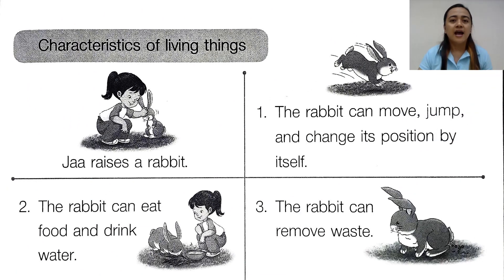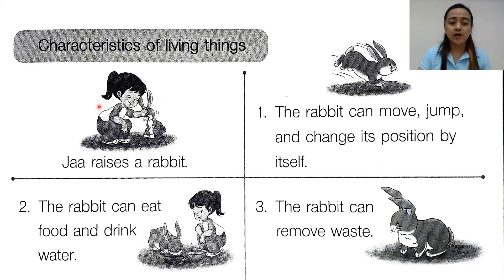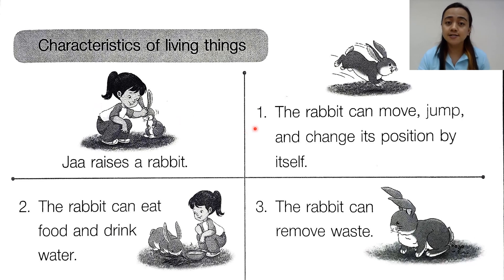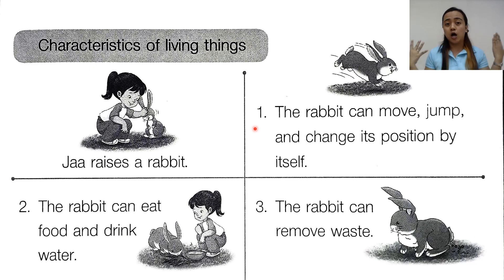I'm going to show you the characteristics of living things. You can see a girl here — her name is Jaa. Jaa raises a rabbit. The rabbit can move, jump, and change its position by itself. So like us, we can move, jump, and change our position.